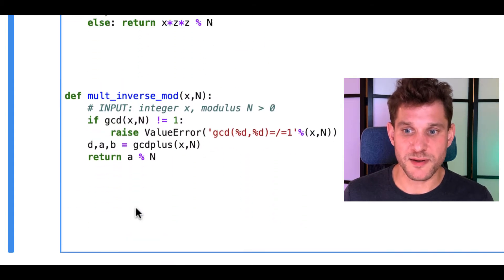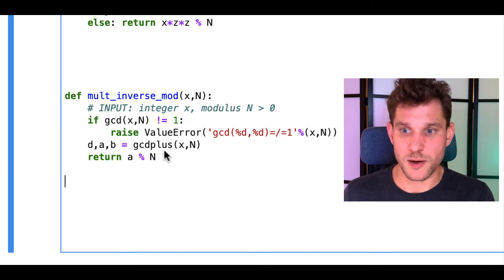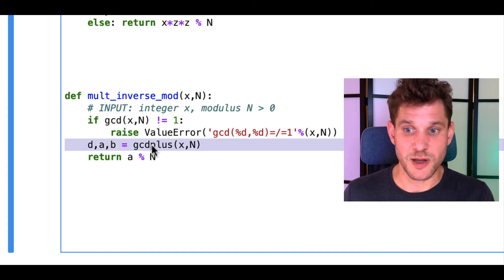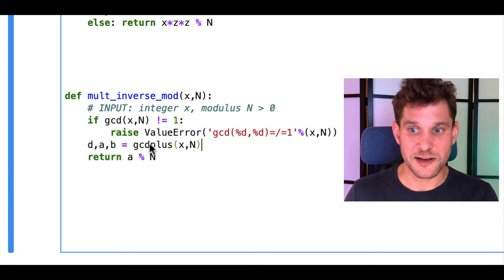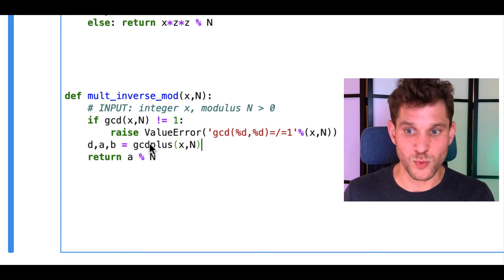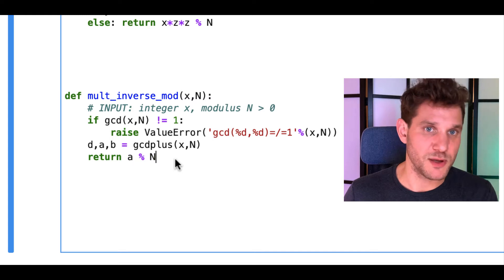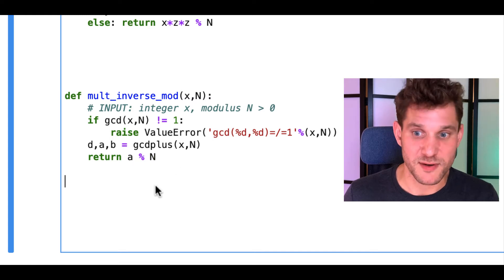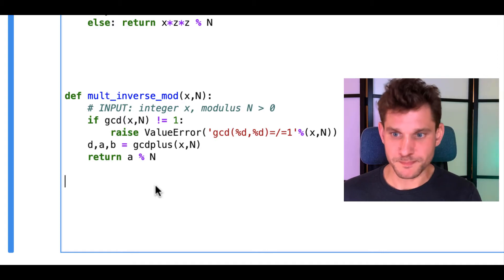Finally, computing the multiplicative inverse essentially just calls back to the Extended Euclid algorithm. Once you can compute integers A and B such that A*x plus B*n equals 1, then A mod n is going to be your multiplicative inverse of x. So we've basically already solved this problem.